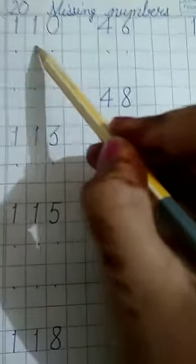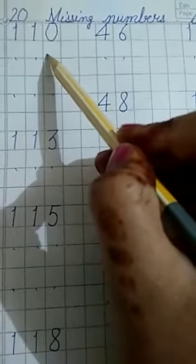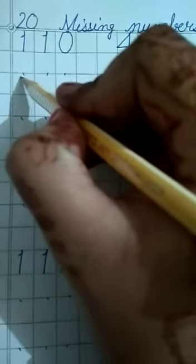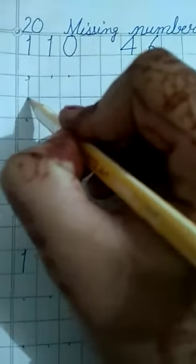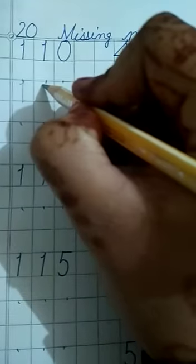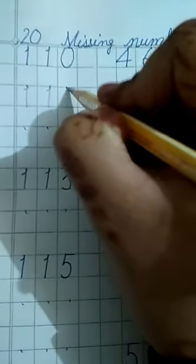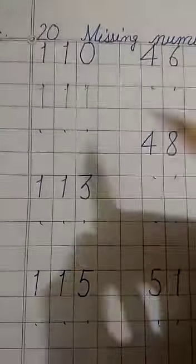Now what comes after 110? 111, right here. So you will write here 111: small tail, standing line. Write here: small tail, standing line, small tail, standing line.